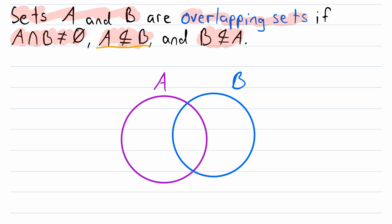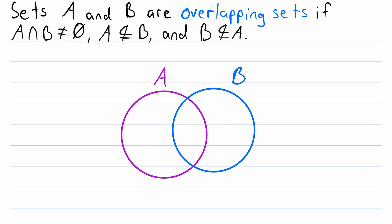And remember that them not being subsets of each other means that they cannot be equal, because equal sets are subsets of each other. So one more time, nice and simple, two sets are overlapping if they have some elements in common, but neither of them are subsets of the other.